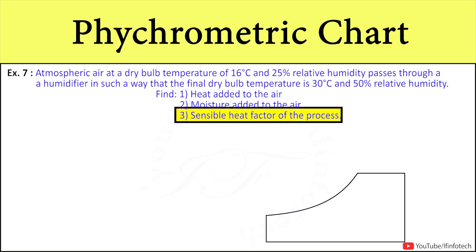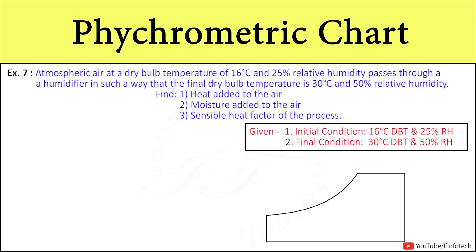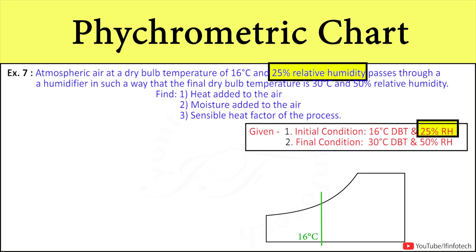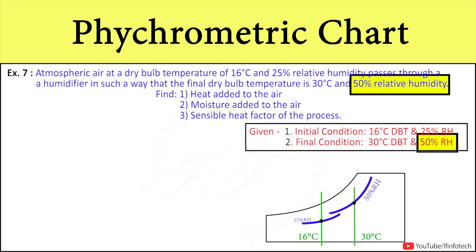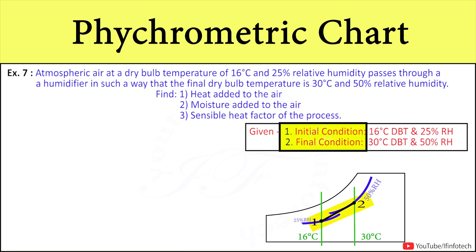First, we will write down the data which has been provided. The given data for properties of air at initial condition is 16 degree Celsius dry bulb temperature and 25% relative humidity, and for properties of air at final condition is 30 degree Celsius dry bulb temperature and 50% relative humidity. We have the process 1 to 2, that is initial to final condition.